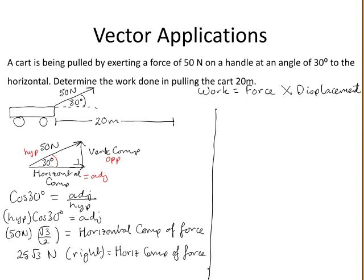So now to find our work done, it's equal to force times displacement. So our force is the horizontal component. It's 25 root 3 N times your displacement is 20 meters. So this is equal to 500 root 3 N meters. And this is equal to 866.03 N meters. And this is the work done.